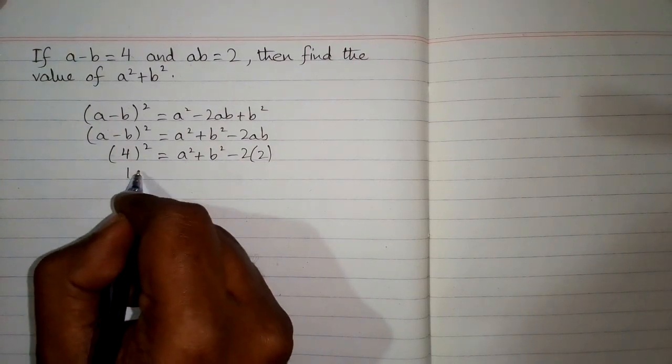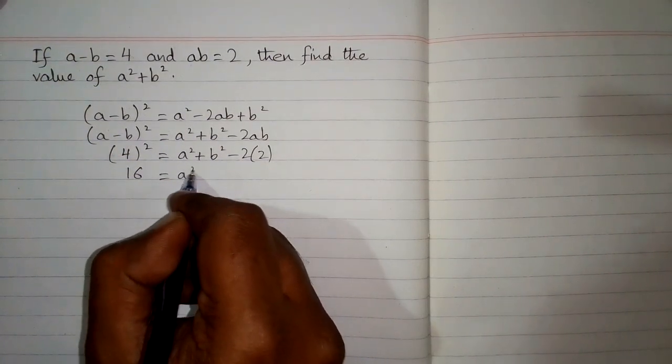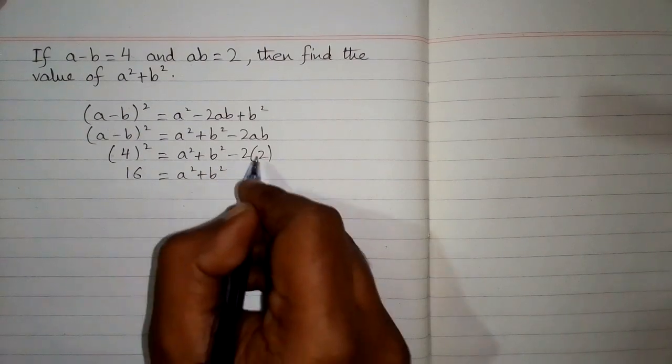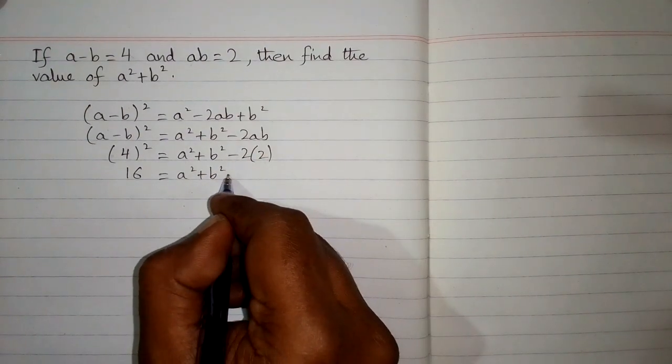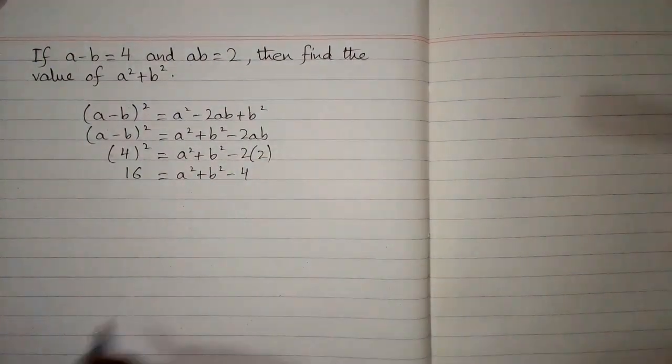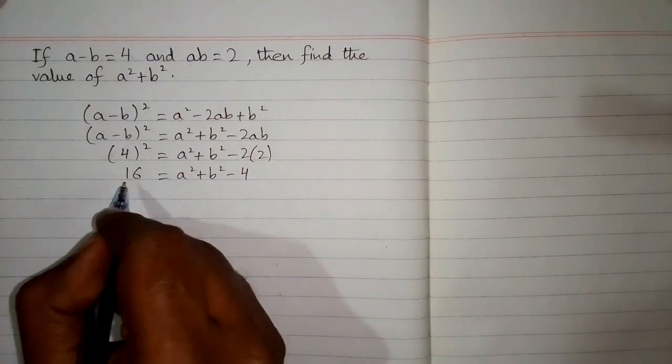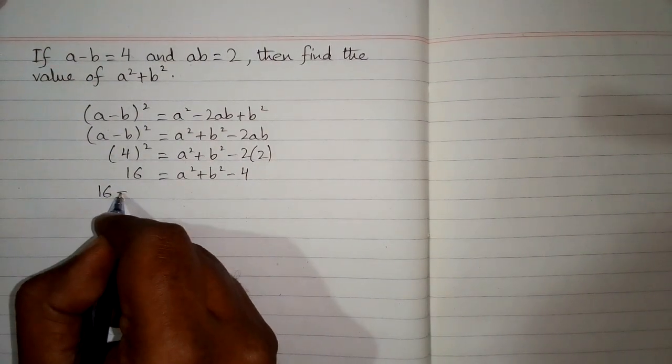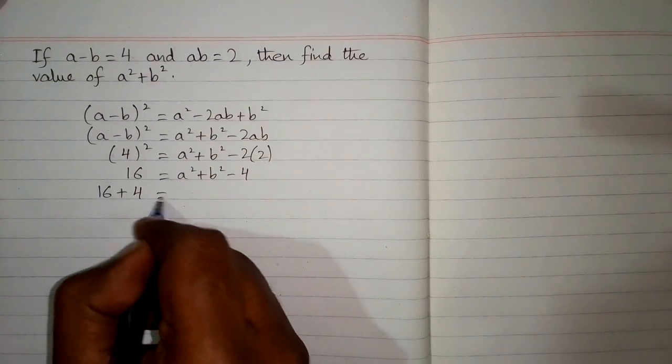Now square of 4 is 16 and 2 times 2 is 4, so we have minus 4. Now we can take this minus 4 on this side of equation, so this minus 4 will become plus 4.